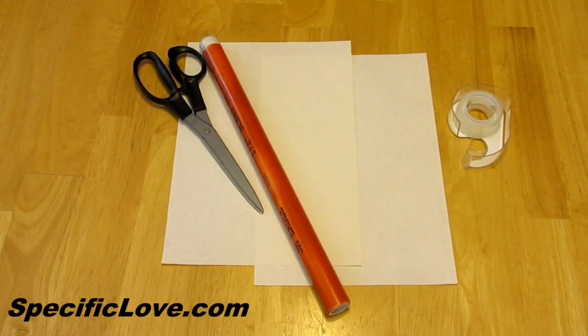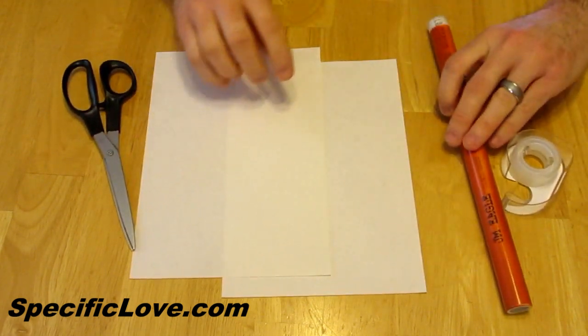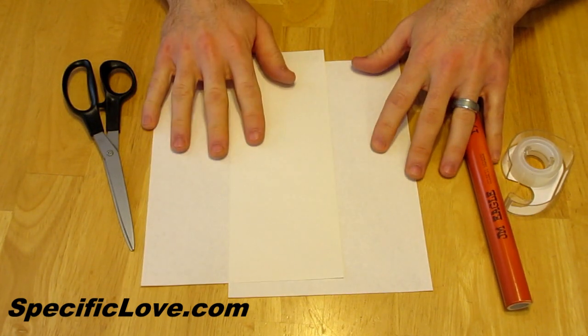Alright, here's what you need to make your paper rockets. You need your pipe, you need some scissors, you need some tape and some scrap paper. This just happens to be 7 by 9 and a half. It does not have to be that size. That's what I had on hand.